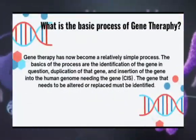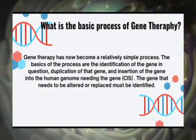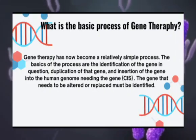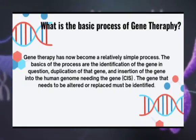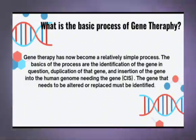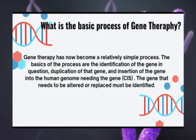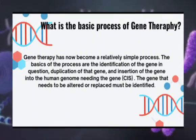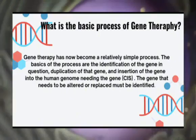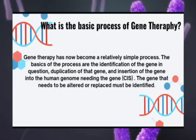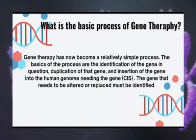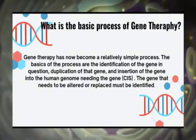What is the basic process of gene therapy? Gene therapy has become a relatively straightforward process. The basics of the process are the identification of the gene in question, duplication of the gene, and insertion of the gene into the human genome. The gene that needs to be altered or replaced must first be identified.